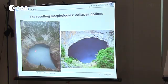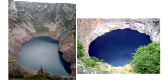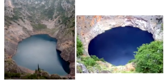Dolines can be of various sizes. This one is very big — it is about 300 meters deep, with a lake at the bottom, meaning you reach the water table. This is a collapsed dolina. There was a big void that formed, and then at a certain moment the roof collapsed inward. In fact, there are a lot of these holes in Croatia.